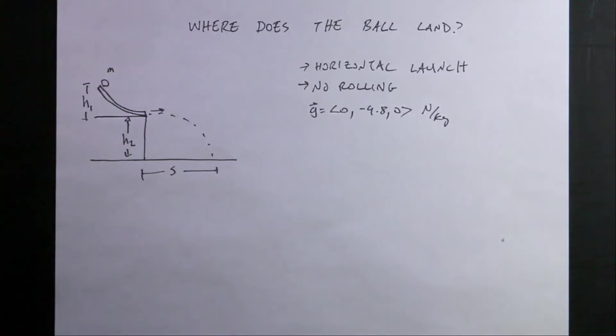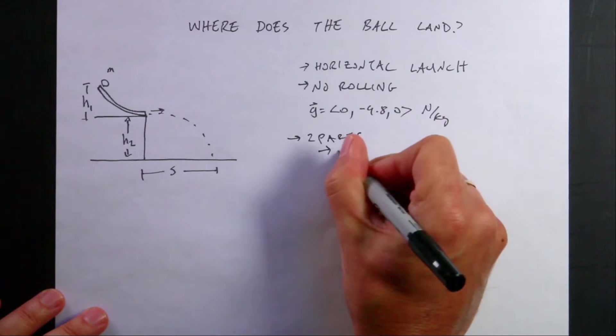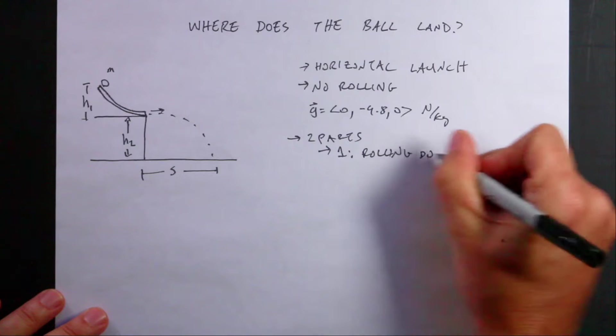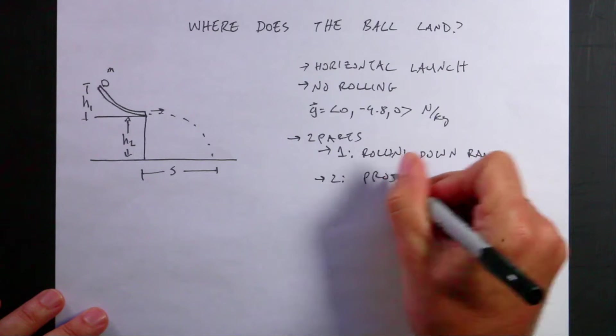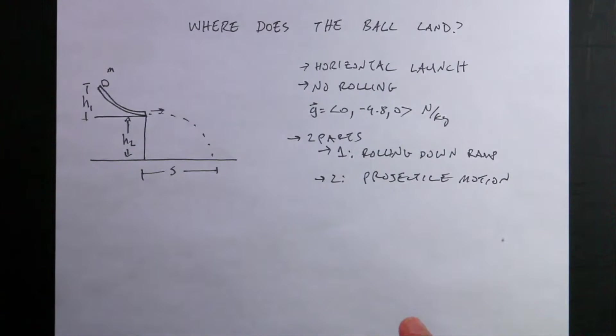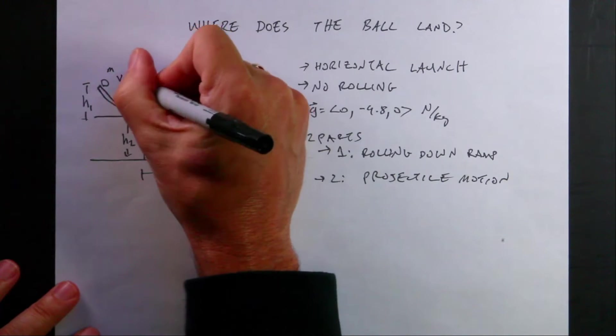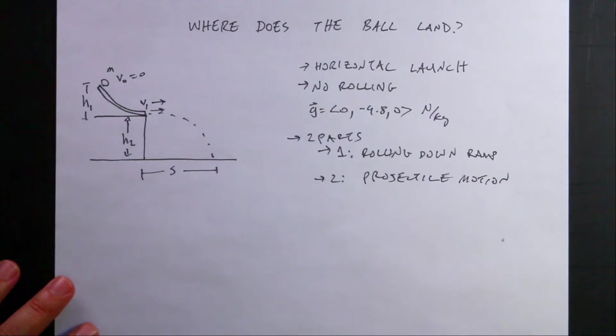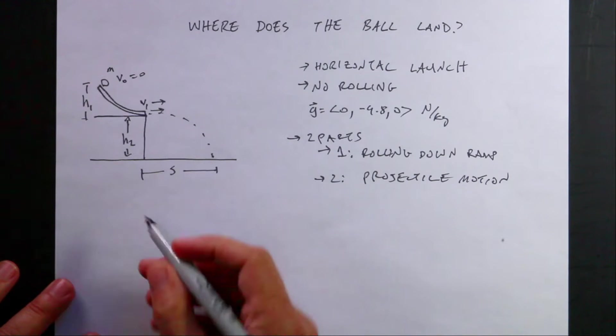But I think the important thing is to think about this in two parts. So part one would be rolling down the ramp, and then two projectile motion. And we're going to have to use these two problems in very different ways to solve. But the thing is that if I say this starts with a velocity, I'll call this v0 equals zero. And then down here we'll call this v1 as the velocity that way. But the velocity at the end of the ramp is the velocity at the beginning of the projectile motion. So let's use the velocity at the end of the ramp and let's just take that problem first.